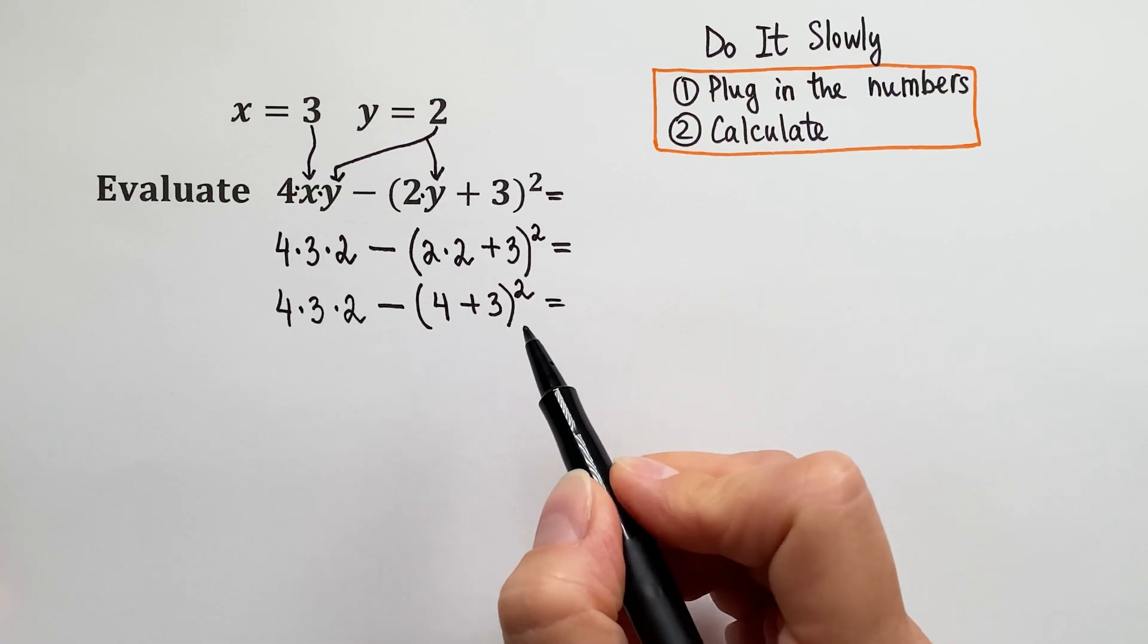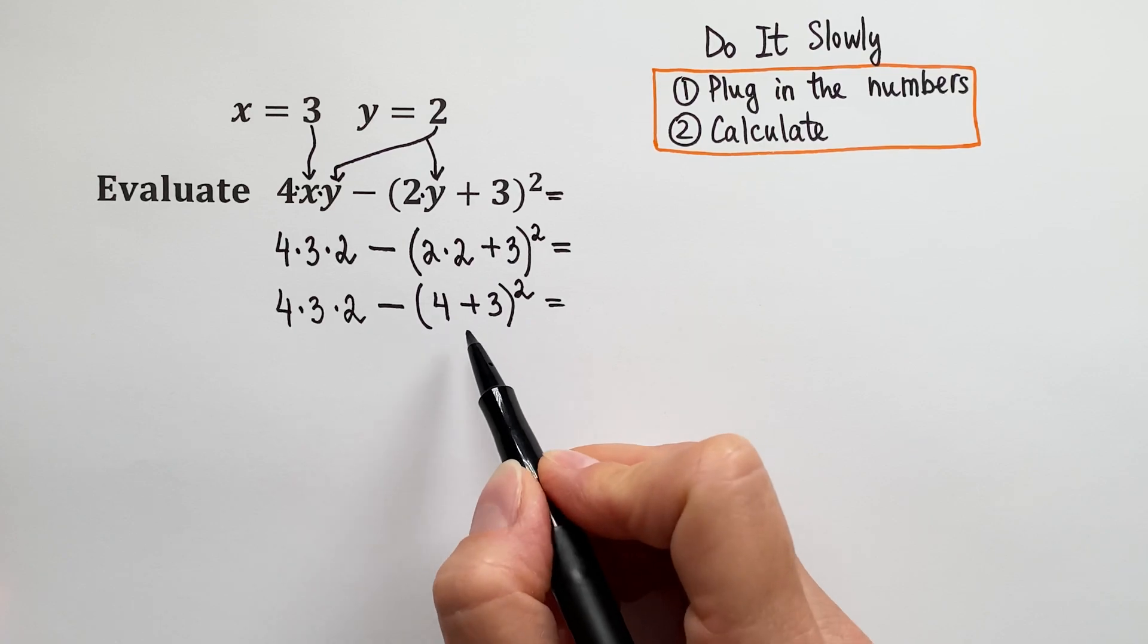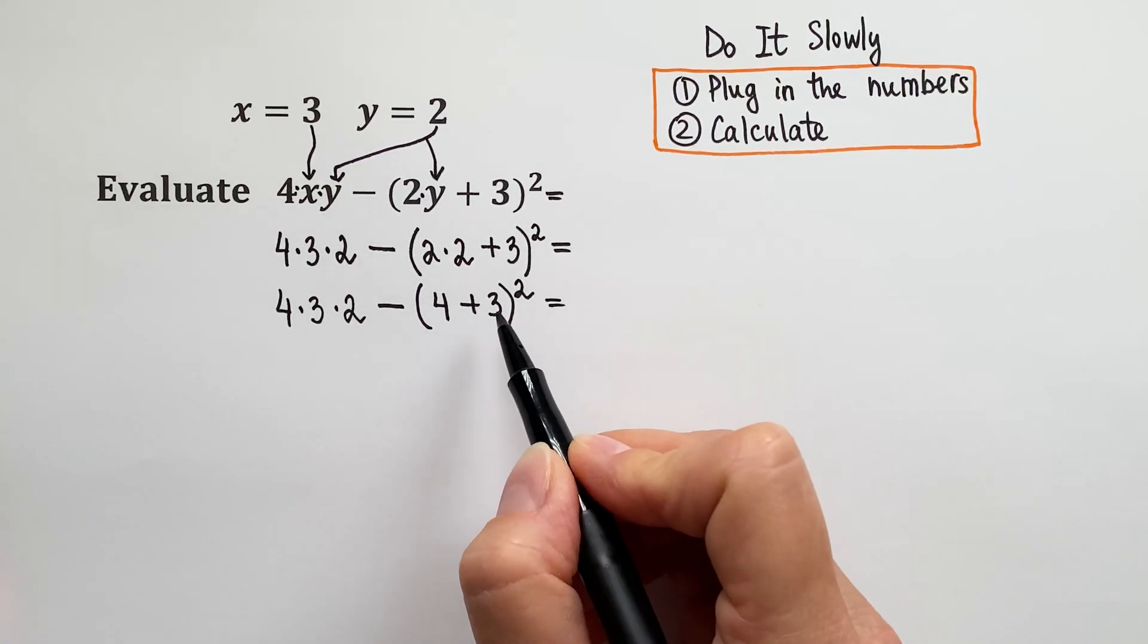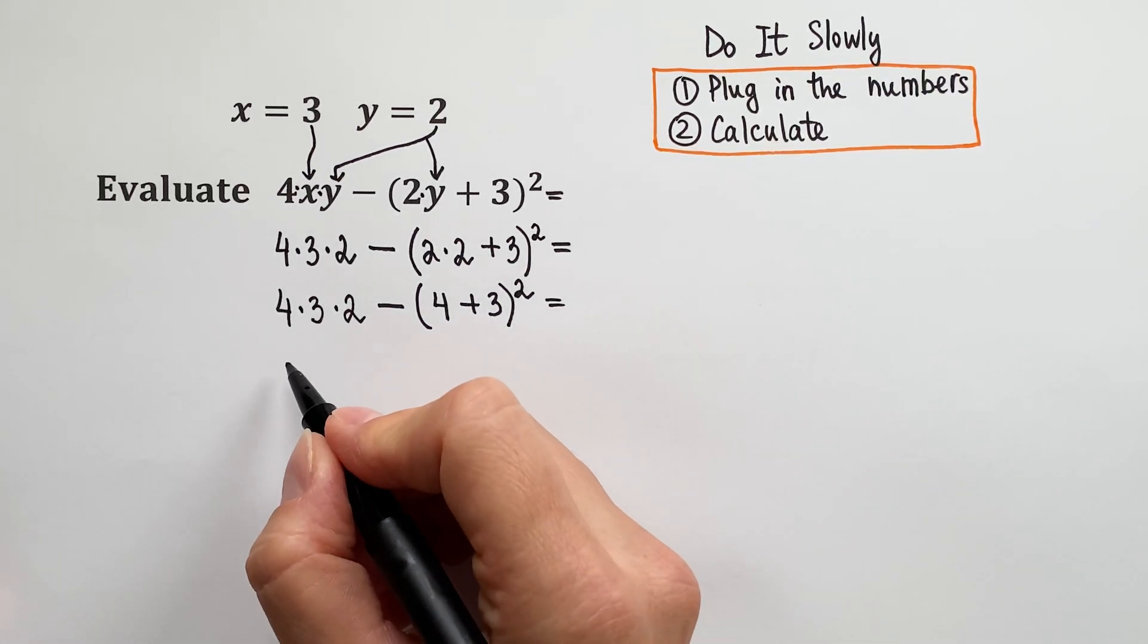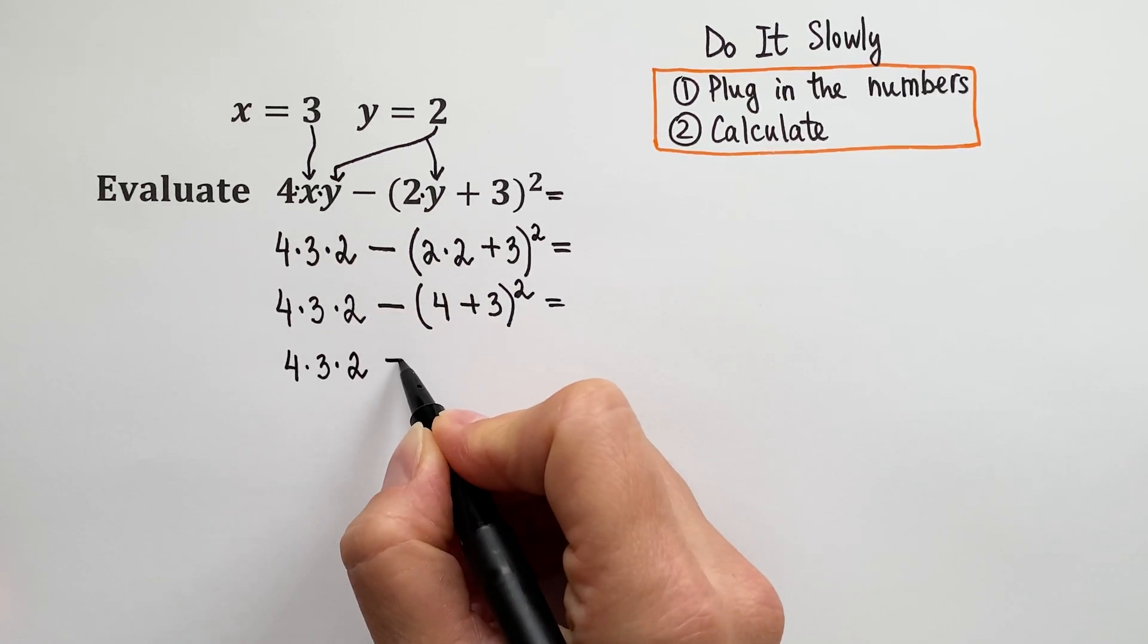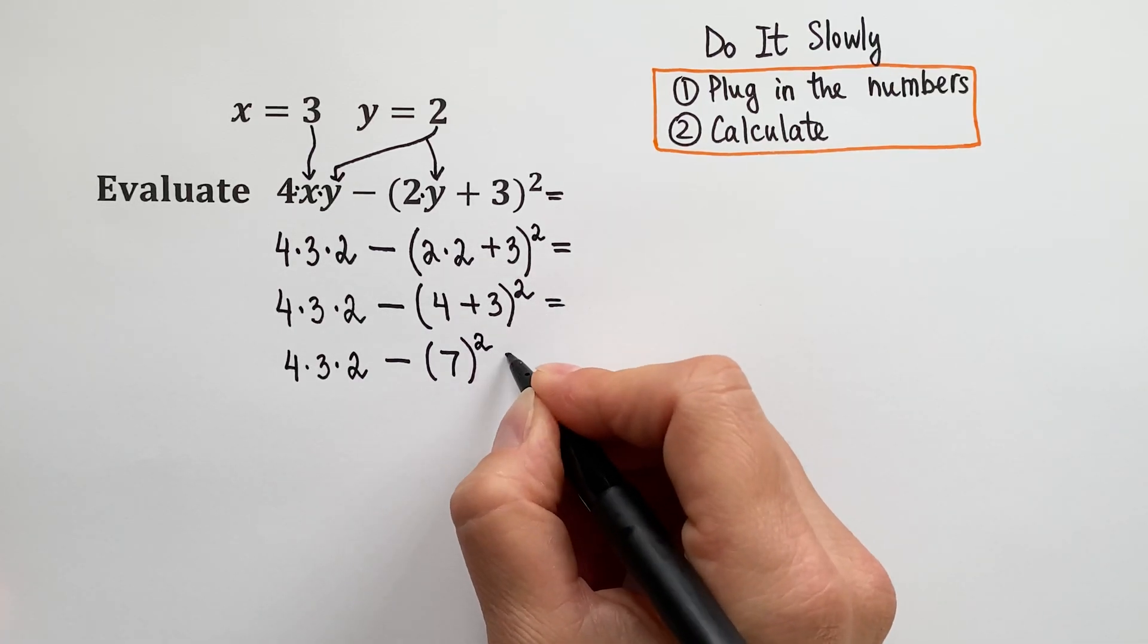I'm going to write step by step so you see what's going on. We still have these parenthesis, so we must do what's inside them. 4 plus 3, which is 7. So let's rewrite this result: 4 times 3 times 2 minus 7. And remember this power, 7 is squared.